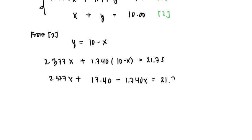We can solve for x here. We get 2.377x plus 1.740 times 10, that's 17.40, minus 1.74x equals 21.75. Subtracting both sides by 17.4, we get 21.75 minus 17.4, that's equal to 4.35, and 2.377 minus 1.74 gives us 0.637.